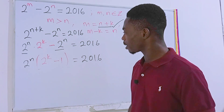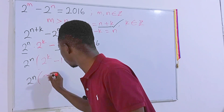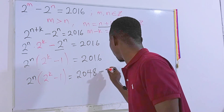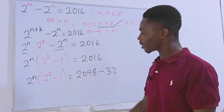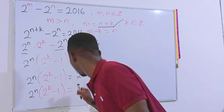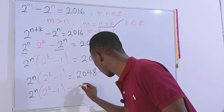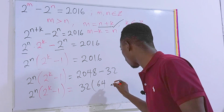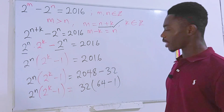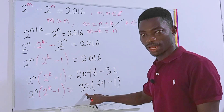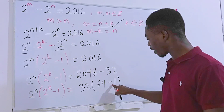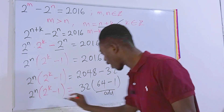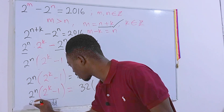We have 2 to the power n times (2 to the power k minus 1) equal to 2016. Now, 2016 is the same as 2048 minus 32. Factoring out 32 gives us 32 times (64 minus 1), which is 32 times 63. Here, 32 is even and 63 is odd (since 64 is even and 64 minus 1 is odd), giving us the even times odd structure we need.